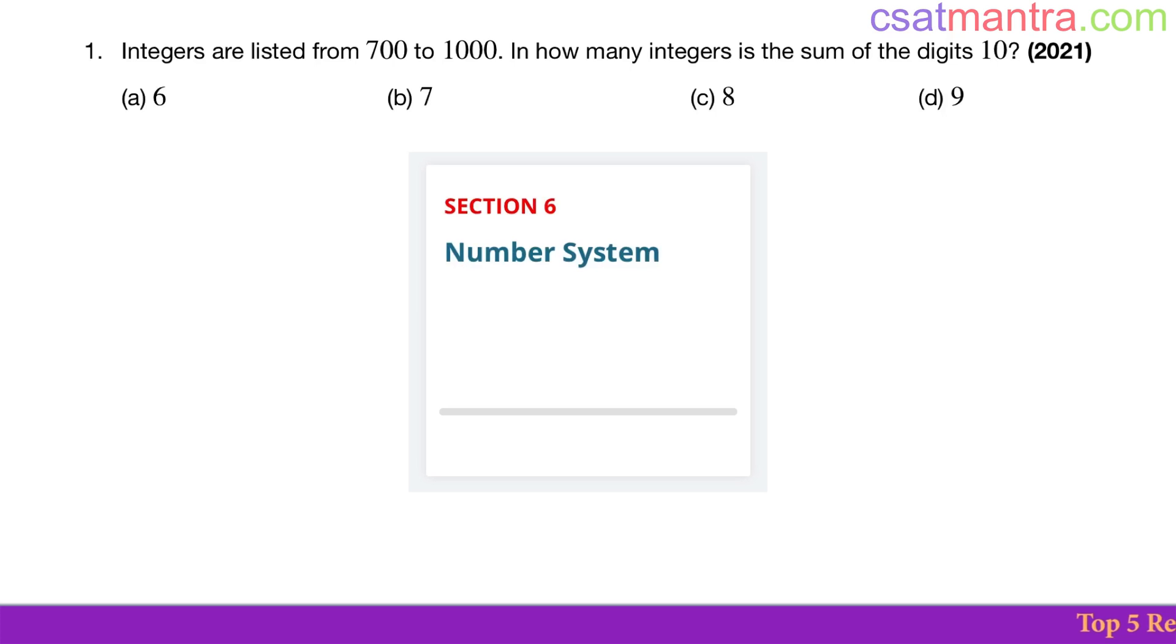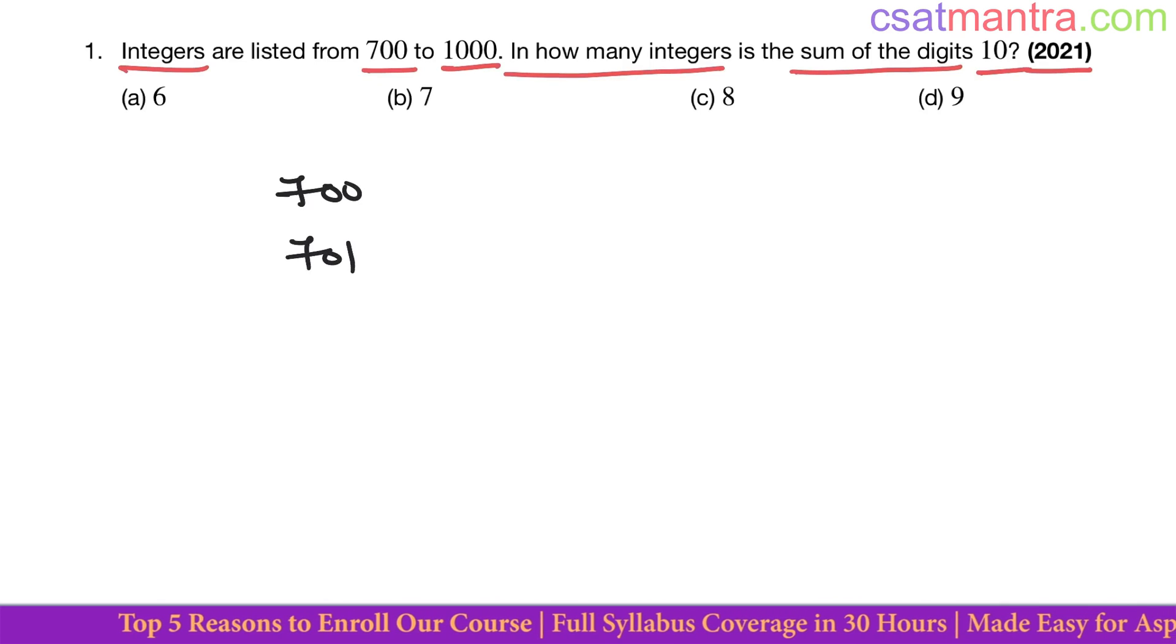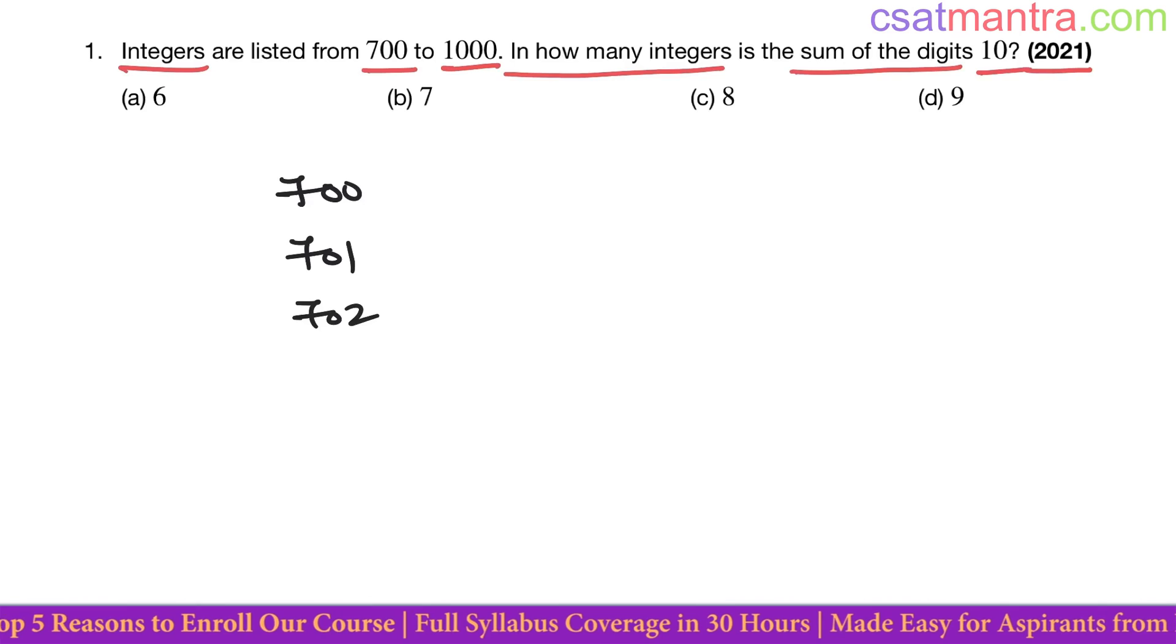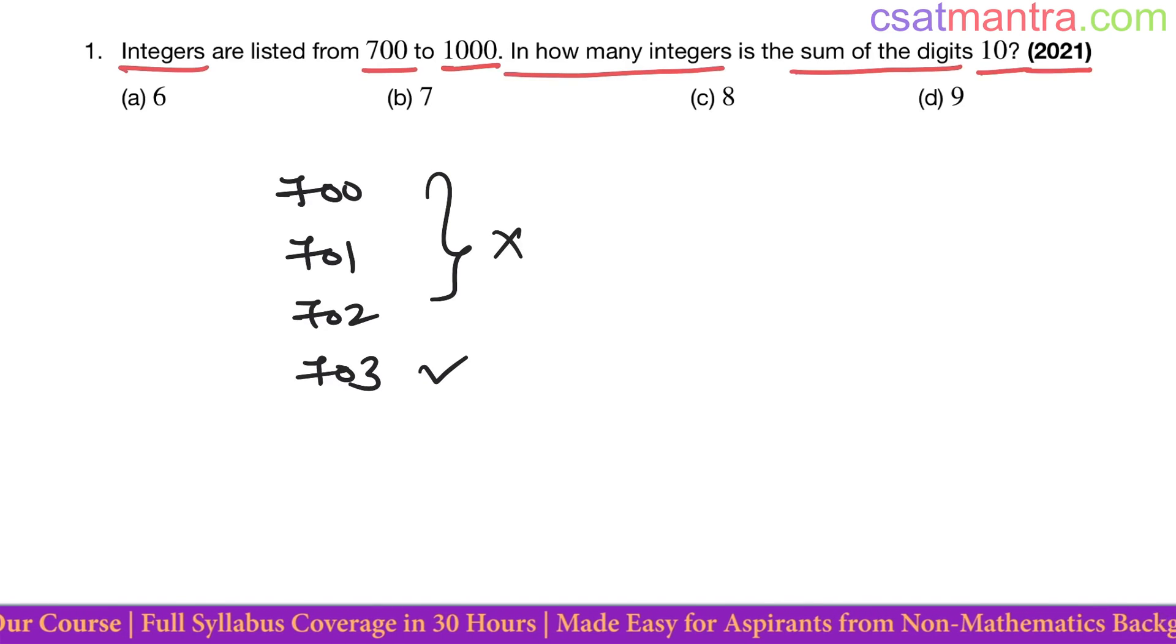This question is asked in 2021 based on number system. Integers are listed from 700 to 1000. In how many integers is the sum of digits 10? Very easy question. 700, no. 701, no. 702, no. 703, okay. 703.